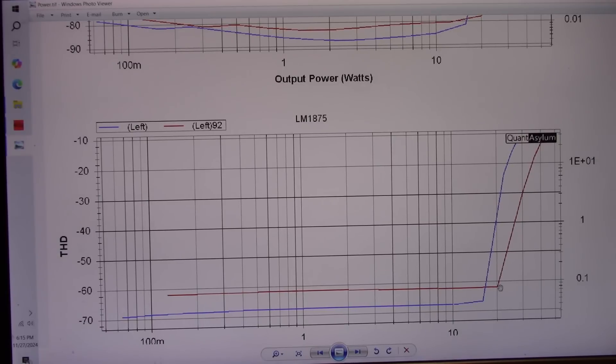They have current limiters. And the TDA is designed to handle more current than the LM1875. Because the power at 8 ohms was similar, a little bit lower in the 1875. But the 4 ohm clipping area is much more limited.